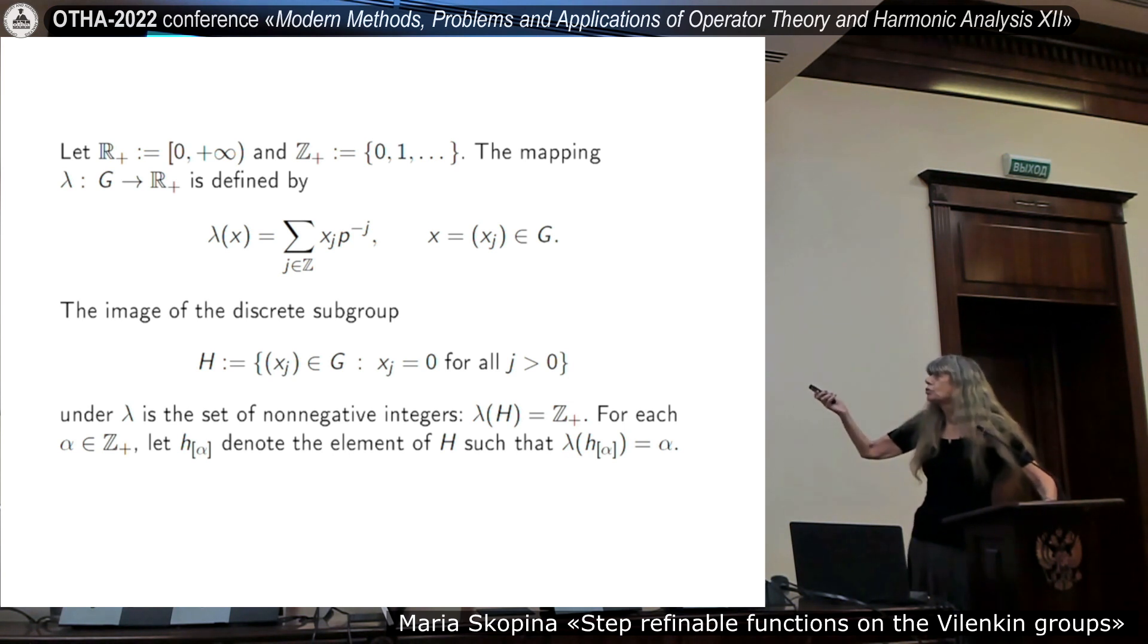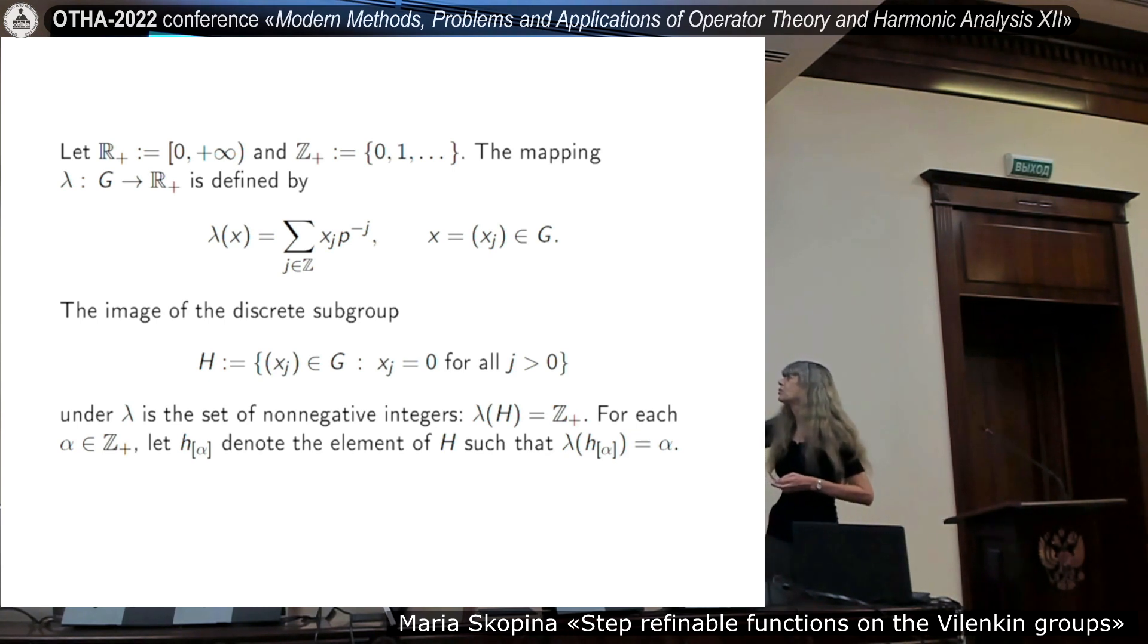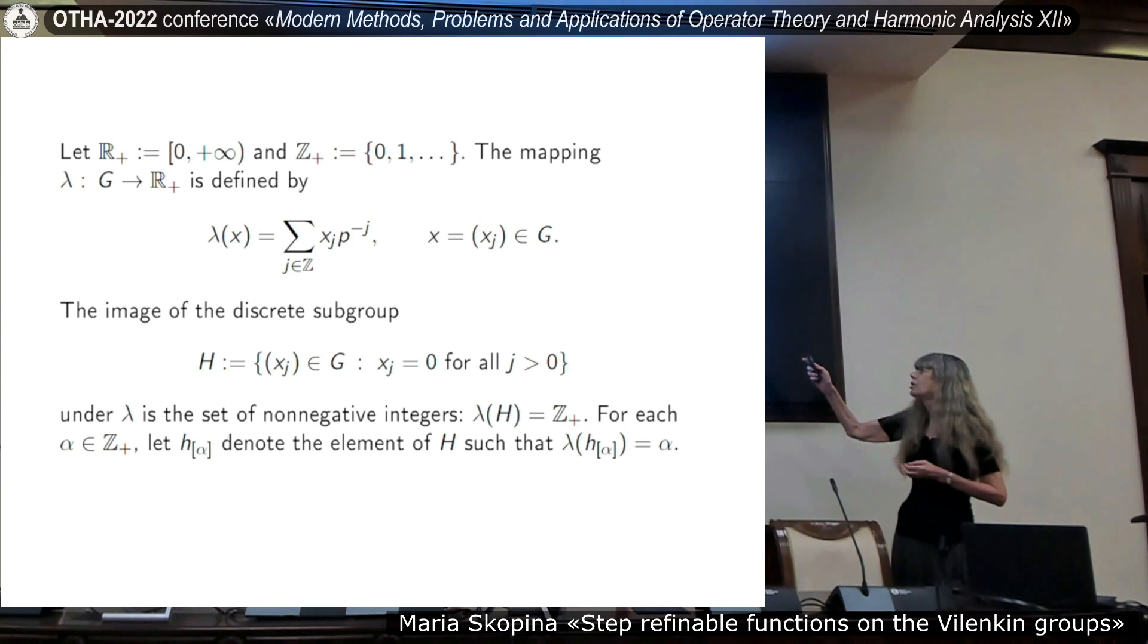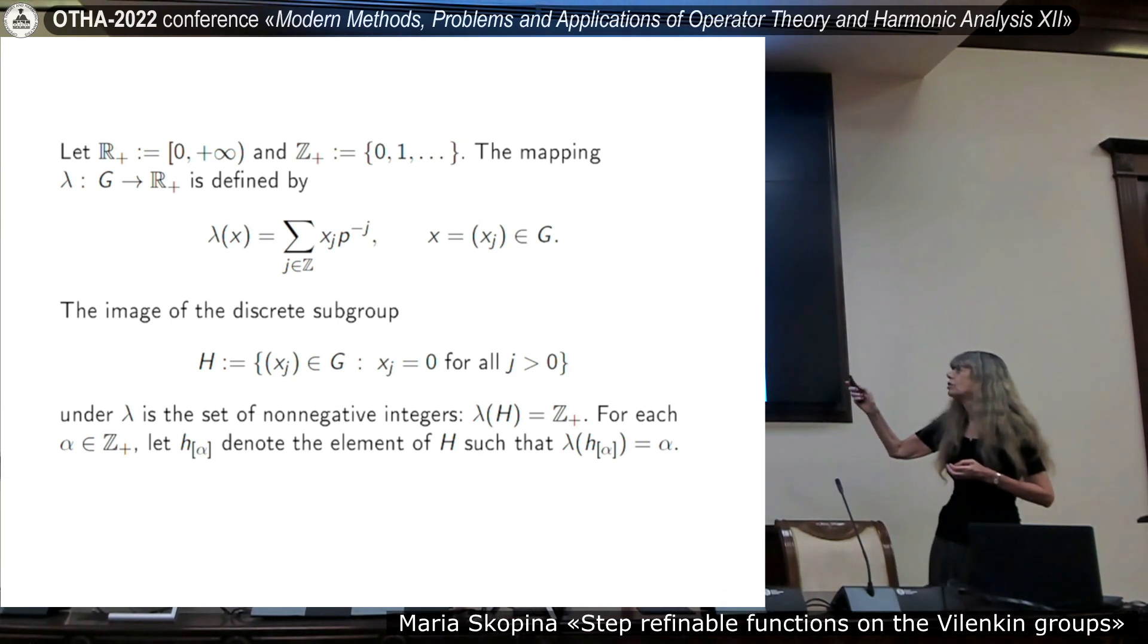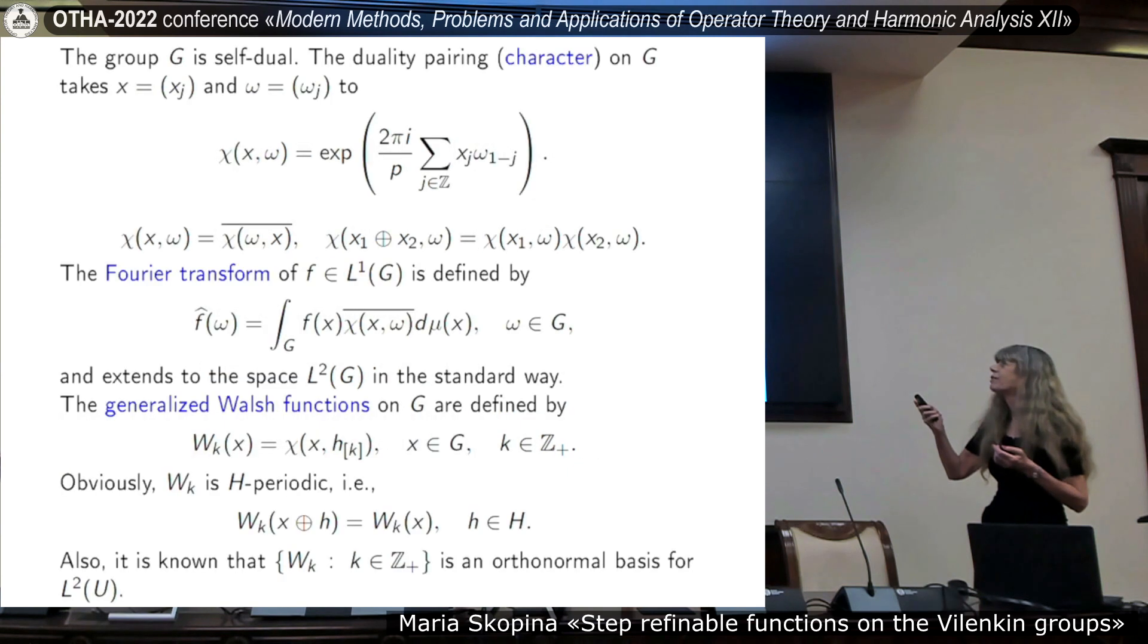More details about these identifications. Map lambda. These are numbers, and x is an element of group. So, the map lambda gives the correspondence between elements of group and semi-line, positive semi-line. h is elements of group such that xj is equal to zero for all positive j. So, this corresponds to positive integers. Lambda of h is z of positive integer. And also, this notation, lambda of h is equal to alpha in square brackets. This is just integer.